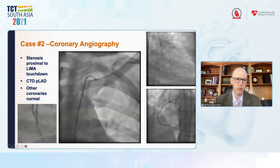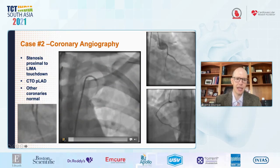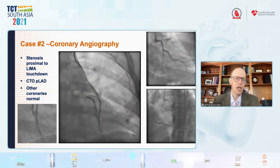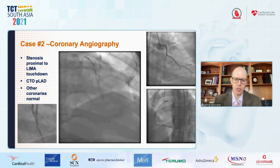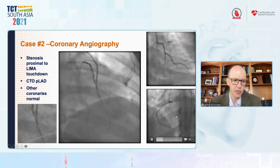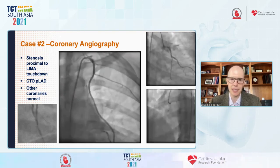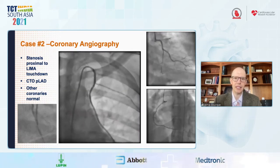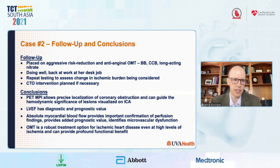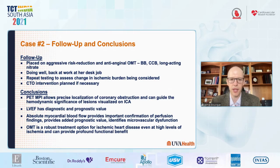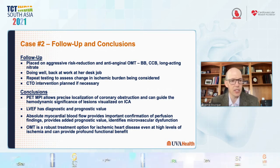The patient went for coronary angiography, which showed touchdown disease and disease just prior to the LIMA touchdown causing substantial reduction in perfusion. No significant abnormalities were found in the other vessels. This was likely severe ischemia of the LAD territory and a large diagonal system. The patient was placed on aggressive risk reduction and anti-anginal optimal medical therapy including a beta blocker, calcium channel blocker, and long-acting nitrate. She is doing well and back at work.